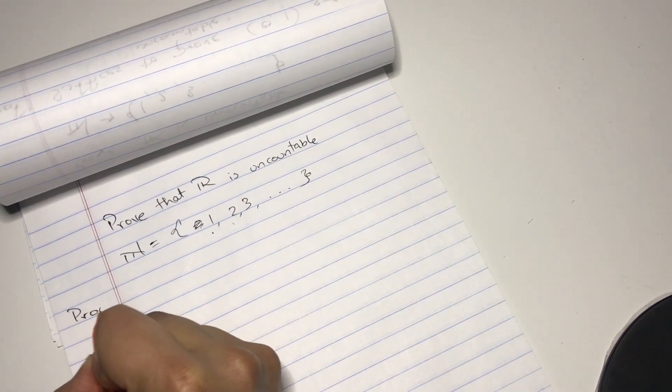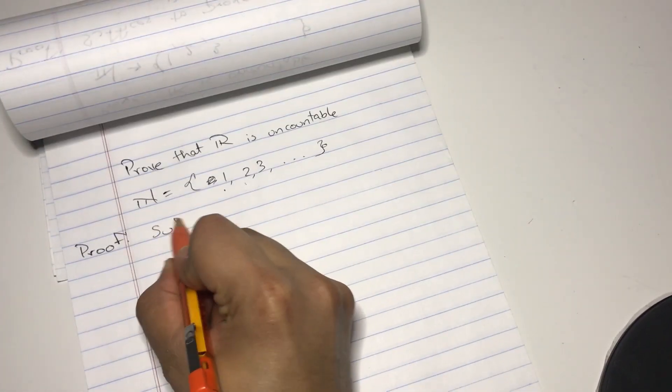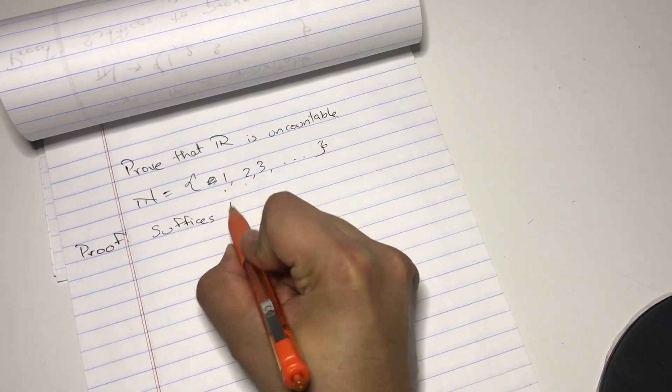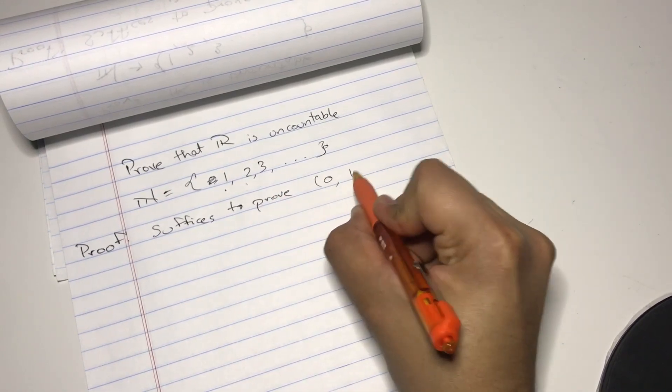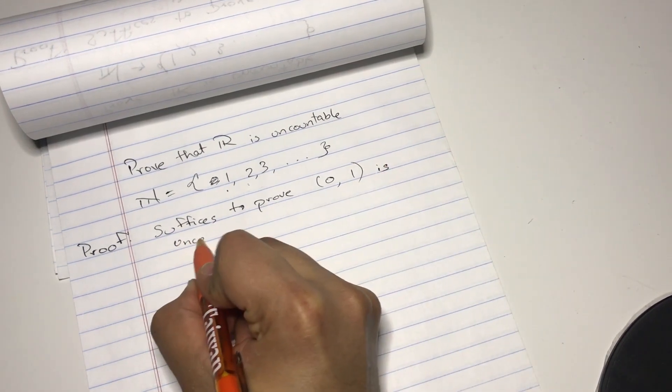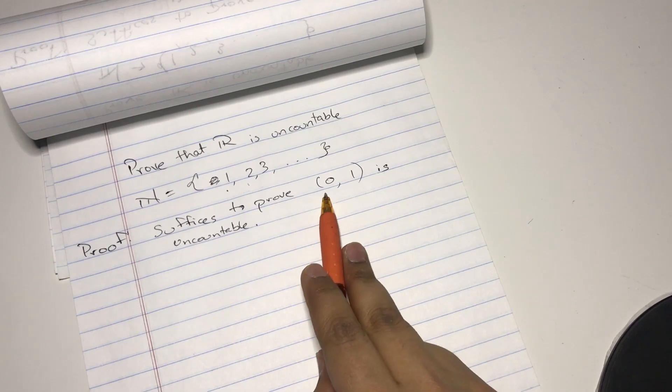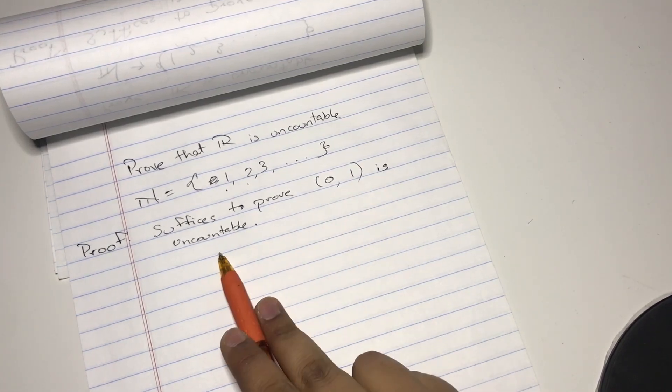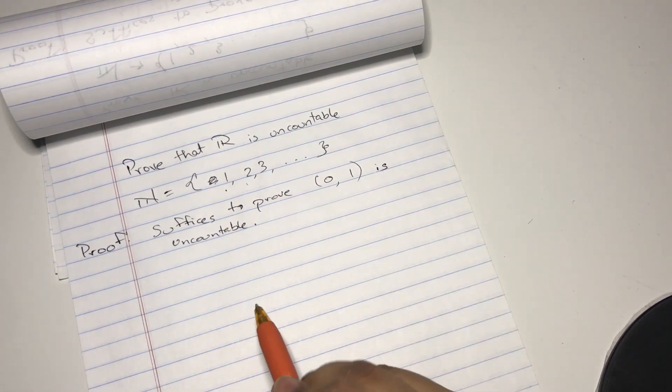Here is the proof. It actually suffices to prove that all the real numbers between zero to one is uncountable. Because if all the real numbers between zero to one is uncountable, then all the real numbers throughout the number line will be uncountable.